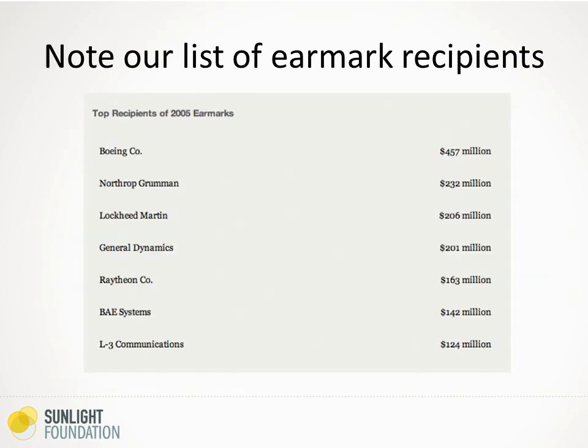Looking at defense contractors, the top recipients in earmarks from those authorization bills in 2005 included Boeing at $457 million and Northrop Grumman at $232 million — hundreds of millions of dollars to big defense contractors. But when Congress started releasing their own earmark disclosures in 2008, the top recipients among private companies were getting like $10 million, $5 million, $4 million. That's because Congress had a very different definition of what an earmark was than the executive branch.